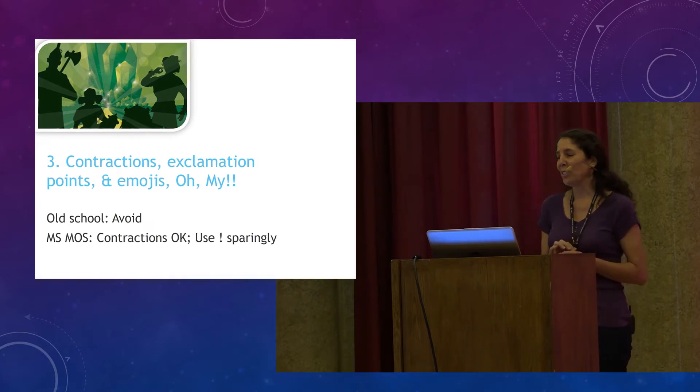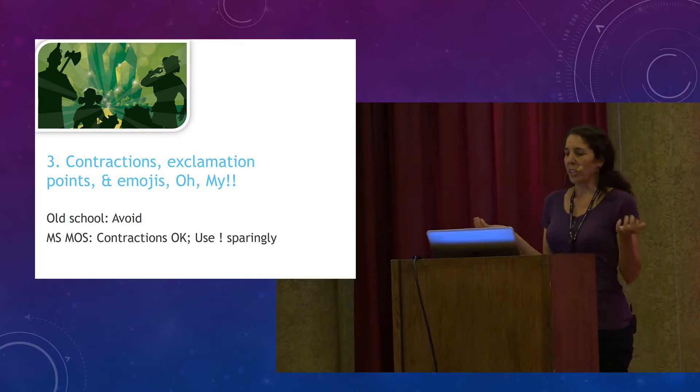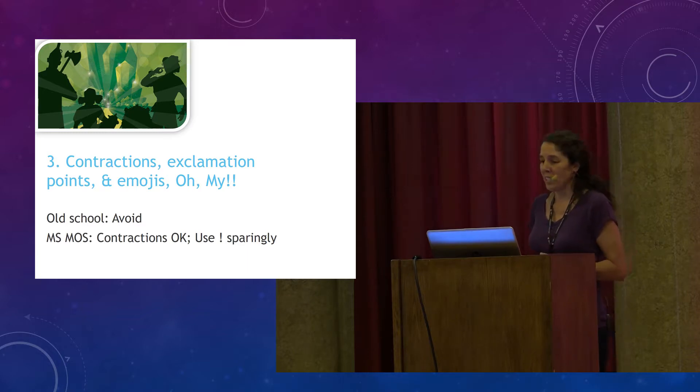Now let's look at how docs use contractions, exclamation points, and emojis. The old school said to avoid contractions because they complicate localization. Translators might have trouble knowing whether it's means it is or it was or it has. And exclamation points had no place in tech docs. Emojis weren't even on the radar. The style guide encourages the use of contractions to create a friendly conversational style. That was a big change for me.